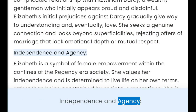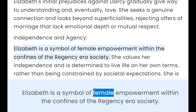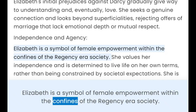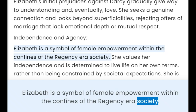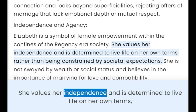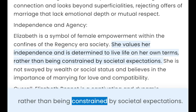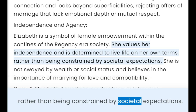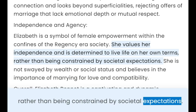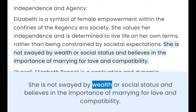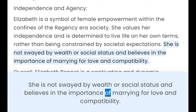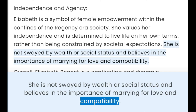Independence and Agency: Elizabeth is a symbol of female empowerment within the confines of Regency-era society. She values her independence and is determined to live life on her own terms, rather than being constrained by societal expectations. She is not swayed by wealth or social status and believes in the importance of marrying for love and compatibility.